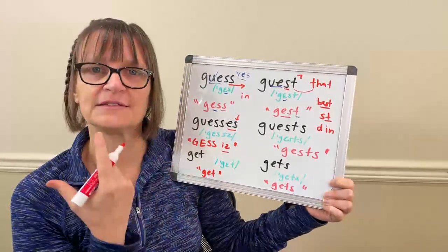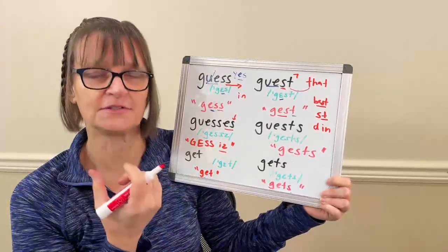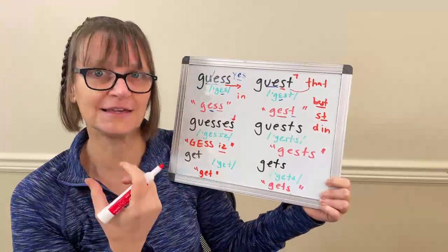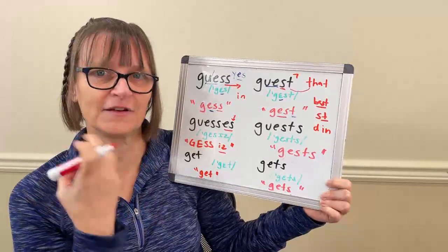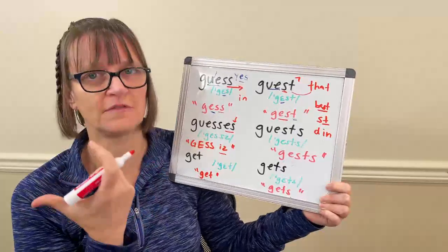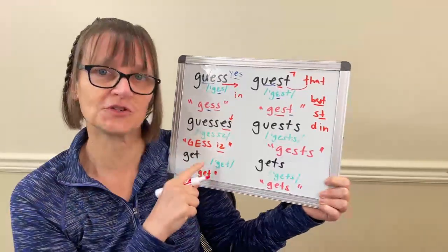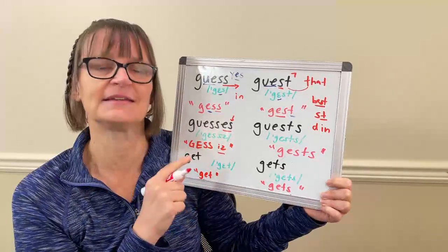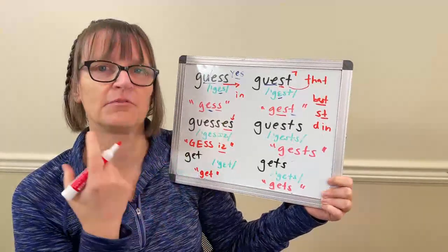That Z sound is not a strong Z. I don't want 'three guessezz' — 'three guesses,' 'three guesses.' It sounds like a very weak Z sound or a very light S, but I also don't want a strong S. Not 'three guessSS' — 'three guesses' — but 'three guesses.'